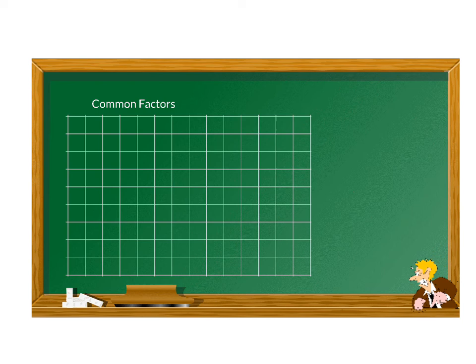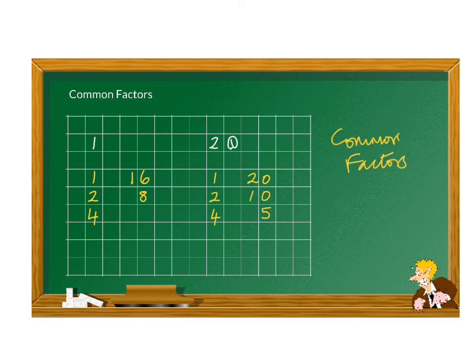So if we take a number like 16 and another number, the number 20, we are going to look at the factors of those numbers. Remember factors are small numbers that go into the larger number. So all the factors of 16 are going to be less than 16 apart from 16 itself, and all the factors of 20 will be less than 20 apart from 20.